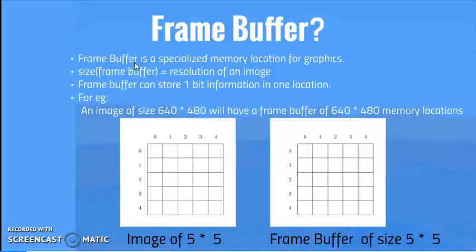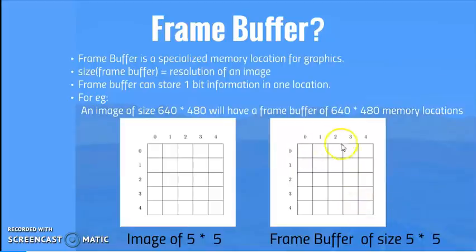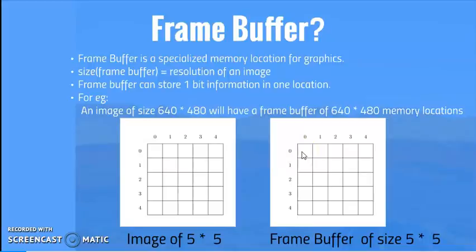Let's look at the layout of a frame buffer. The size of the frame buffer is equal to the resolution of the image. The resolution of an image is the number of pixels in the horizontal direction multiplied by the number of pixels in the vertical direction. If my image is of size 5×5 — 5 pixels vertically, 5 pixels horizontally — then my frame buffer will also be of size 5×5 for a single plane. Frame buffer can store one bit of information in one location. So if an image is of size 640×480, I will have a frame buffer with 640×480 locations in it in a single plane.